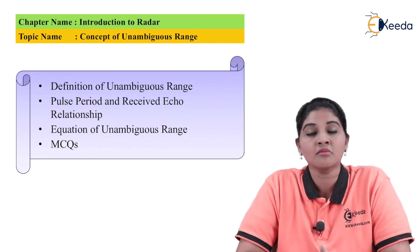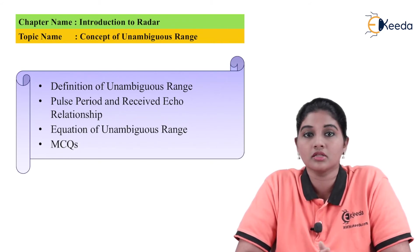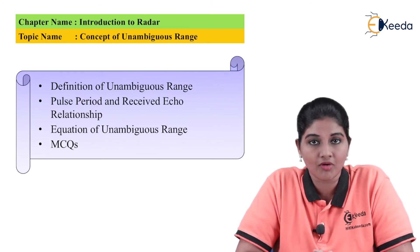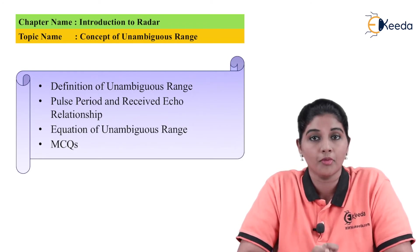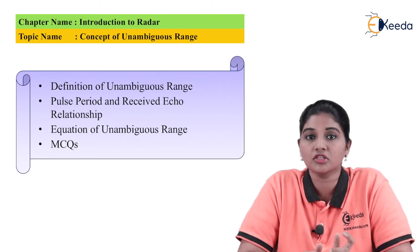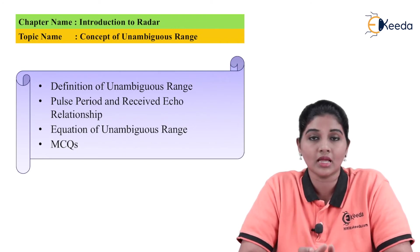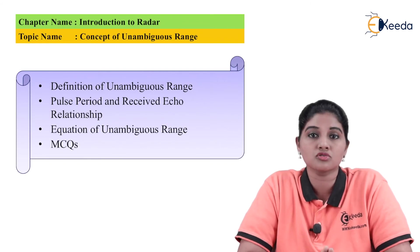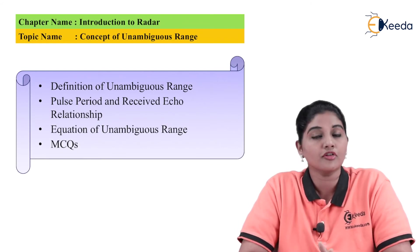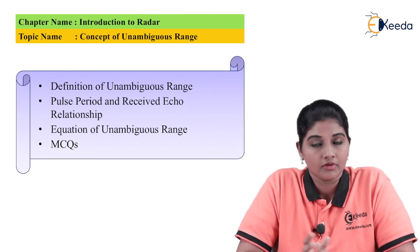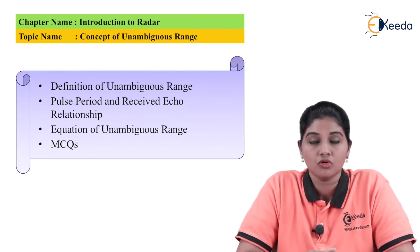In that case, the echo signal may get associated with the next pulse rather than the original one, providing an incorrect range value. The echo signal should have been associated with the first pulse, but because the time duration between pulses is very small, it becomes associated with the next pulse. Therefore, it is very important in a radar system that the waiting period has a sufficient value.